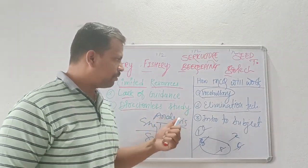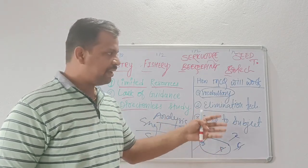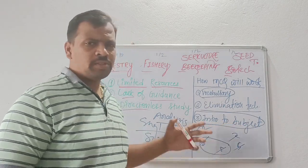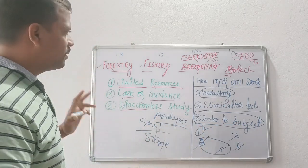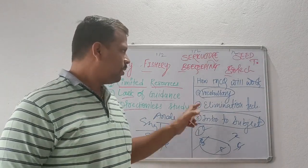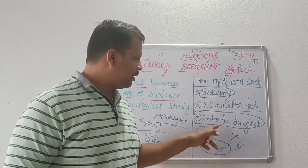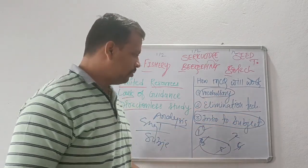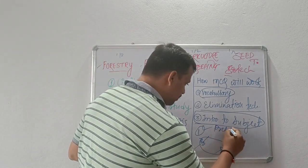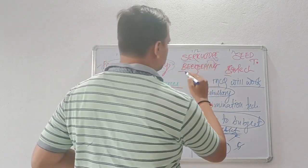If you practice more MCQ-type questions, say around 100 questions on each subject, then you can easily eliminate at least 50% of wrong options. You know the subject, the depth of the subject, and the basic vocabulary, by which you can guess the answer. The chances of your practice question coming in the exam are also more.